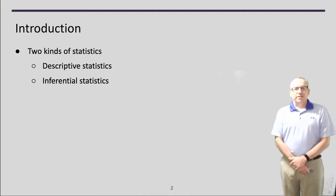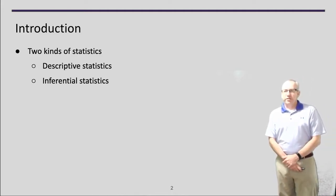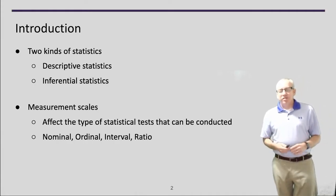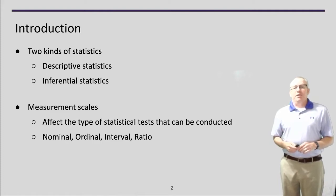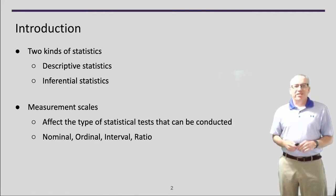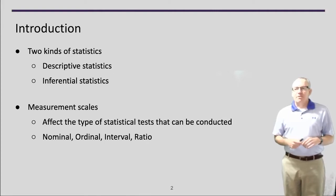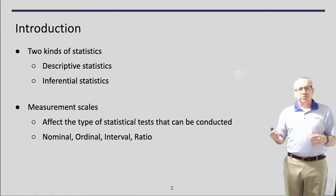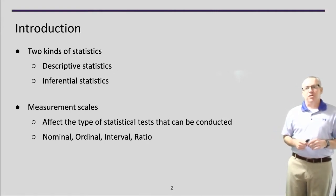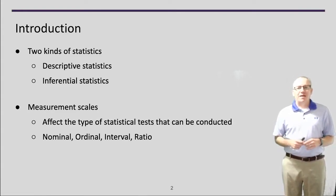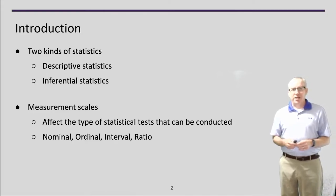When we think about statistics, we have two different kinds: descriptive statistics and inferential statistics. We also have to consider measurement scales, which affect the type of statistical tests we can conduct. There are things like nominal, ordinal, interval, and ratio — and that really affects what type of mathematical reasoning you can do about the data itself.